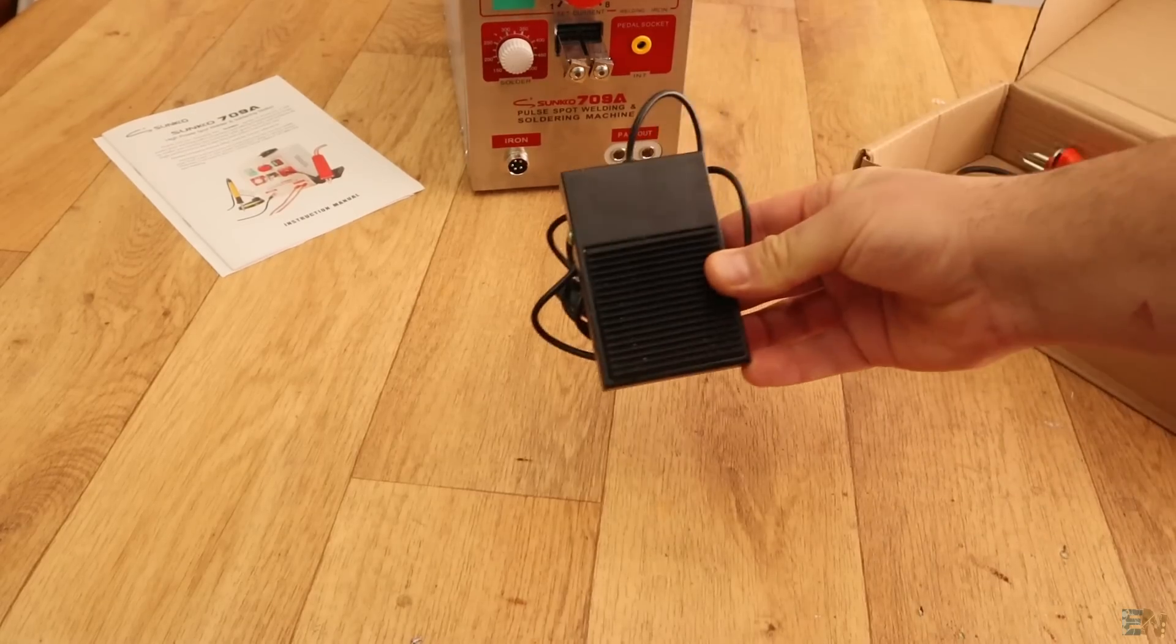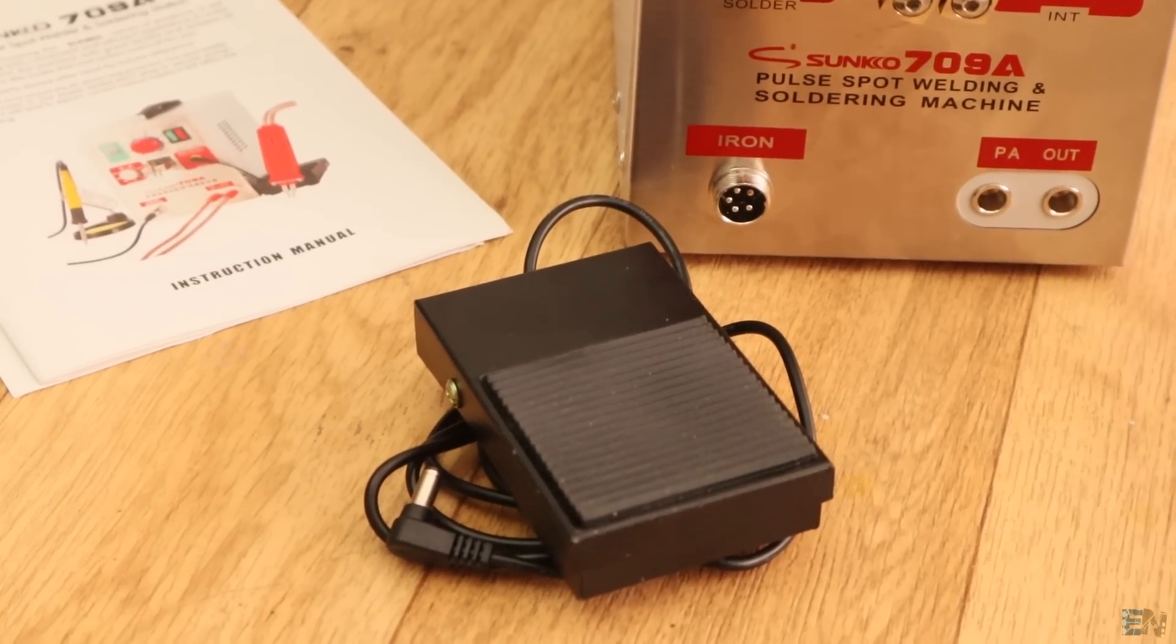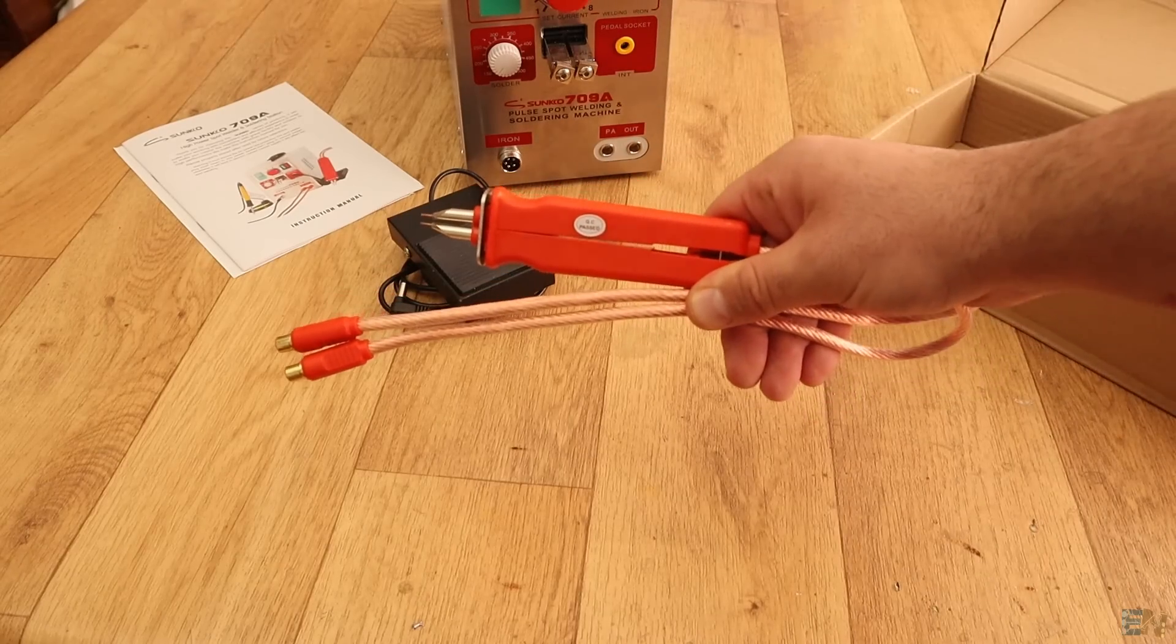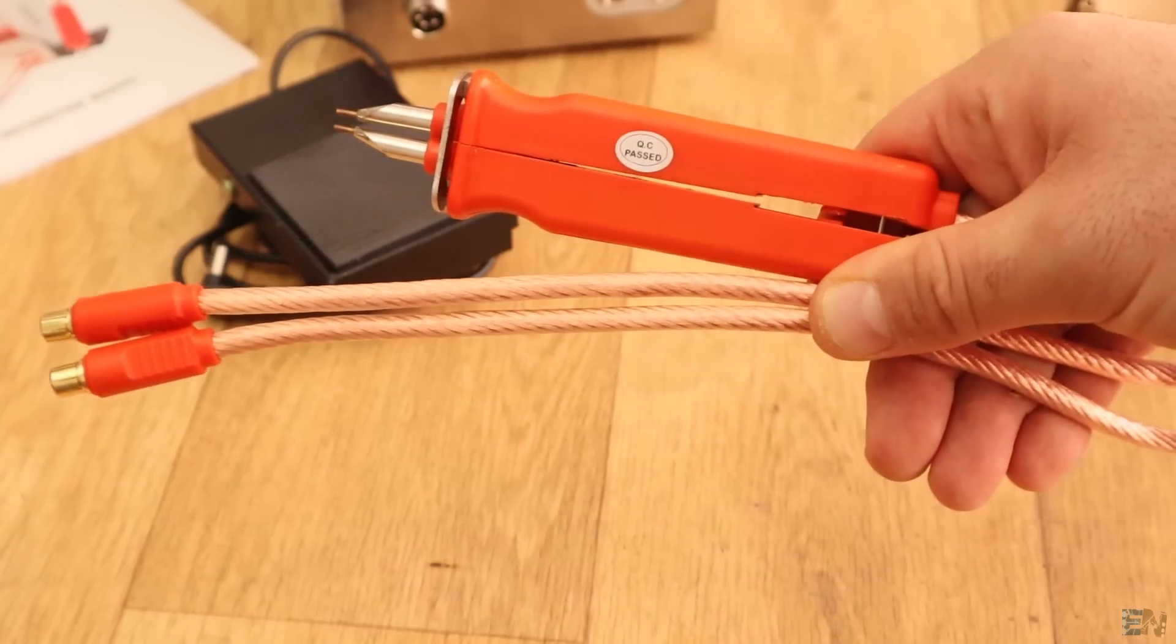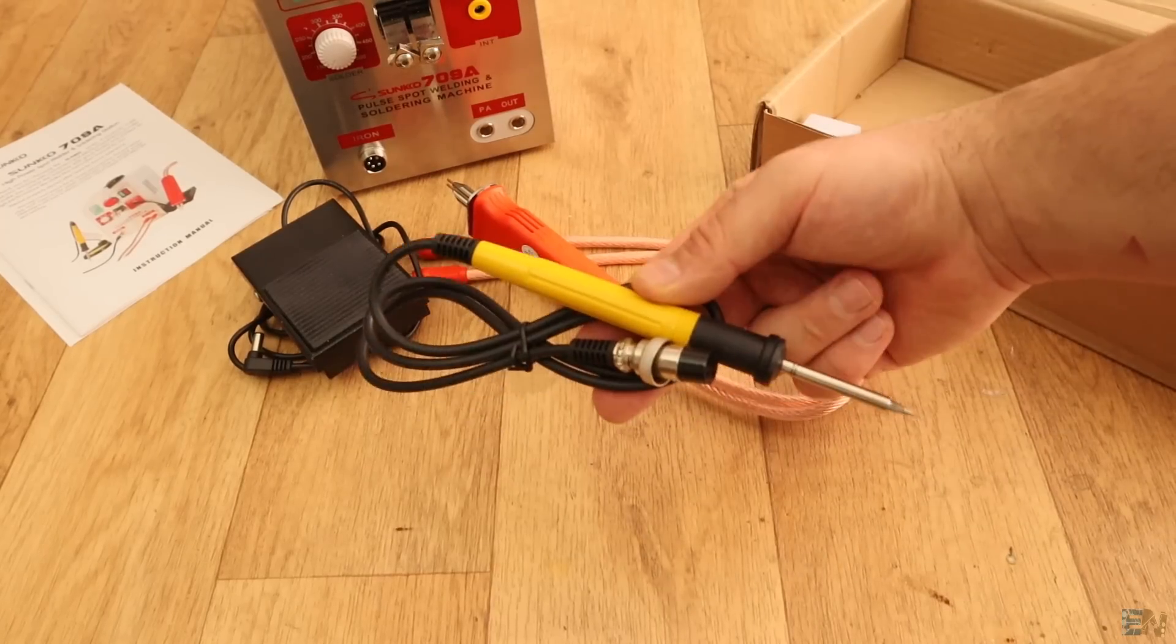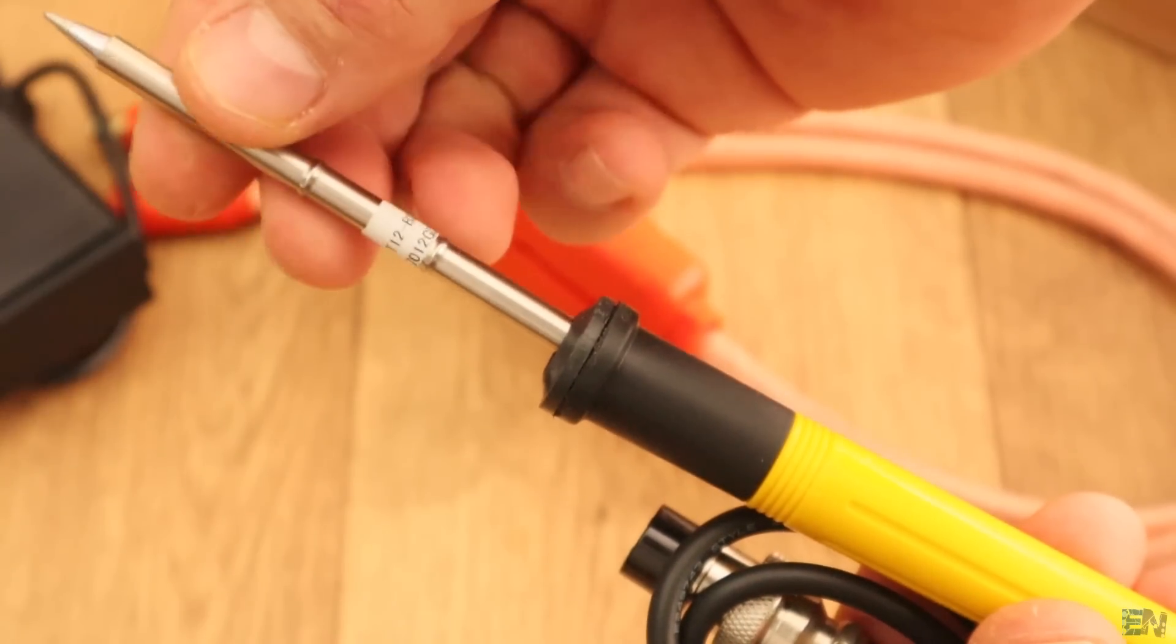We have the foot pedal, so we could activate the welding process with our foot and still be able to use both hands. Then we have the extension spot soldering tool which are basically two thick cables with two copper tips and also kind of springy. We also have a plastic made soldering iron that uses the T12 tip like this one, so that's pretty nice.